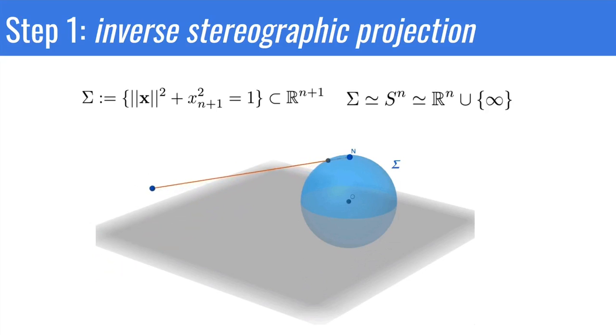Sigma is just the n-sphere, and it has one extra point that R^n doesn't have: the north pole. Sigma is our first candidate for conformal space.